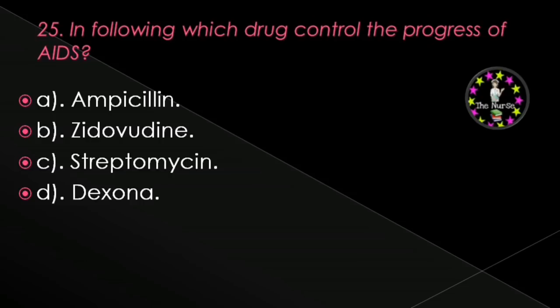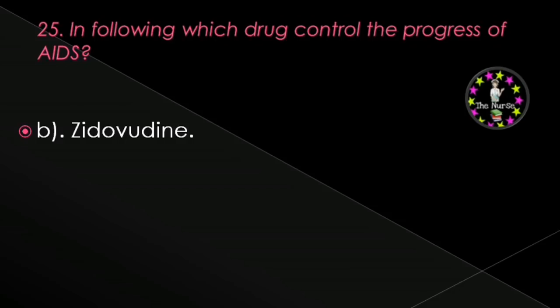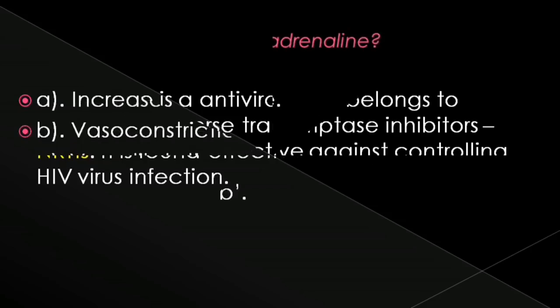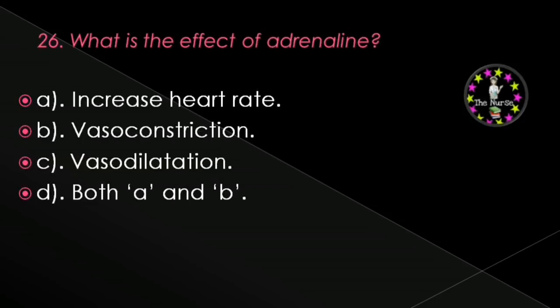Next question: Which drug controls the progress of AIDS — ampicillin, zidovudine, streptomycin, or dexona? Correct answer is zidovudine. Zidovudine is an antiviral drug belonging to nucleoside reverse transcriptase inhibitors (NRTIs). It is found effective against controlling HIV virus infection.